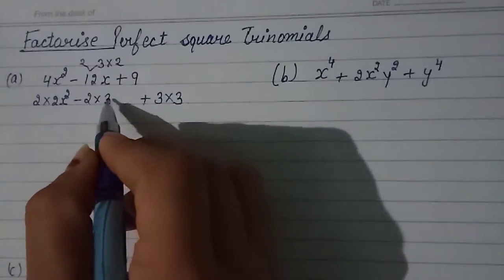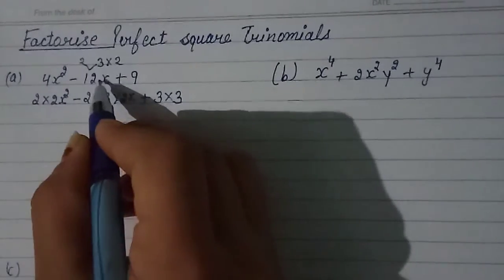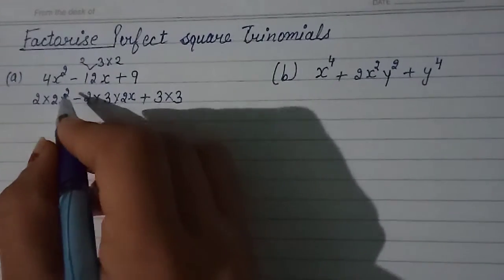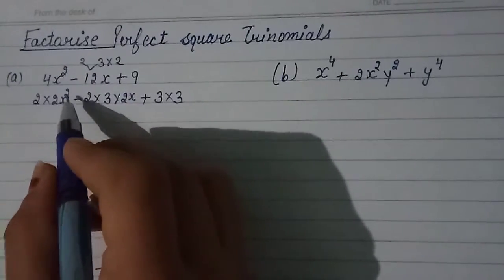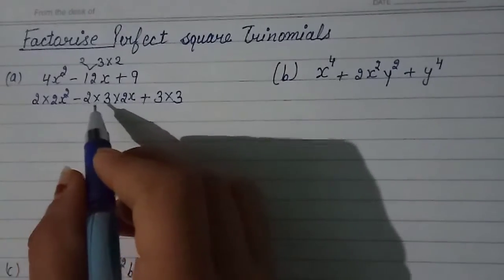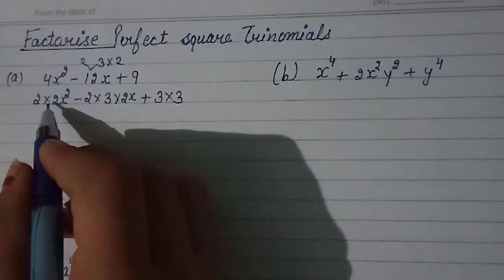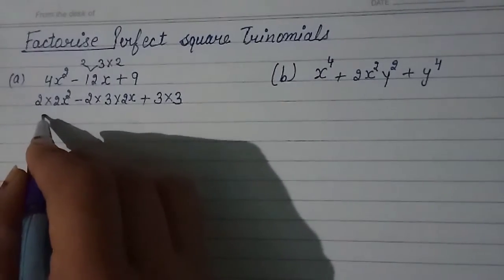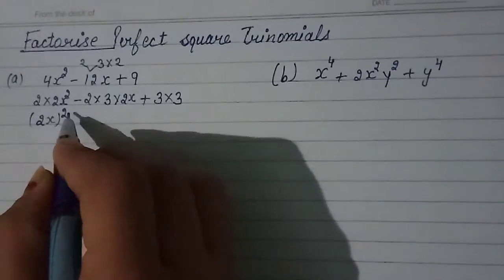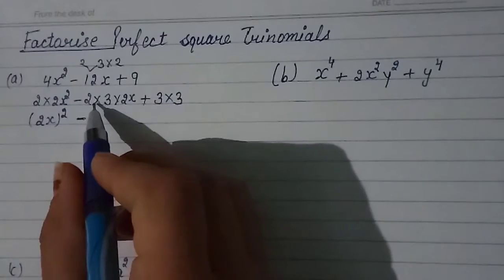So you can write it as 2 into 3 into 2, but write x as well because x is here. Because this one is x, we will also write it. We have 2 into 2x squared. If I want to factorize this x squared, then x into x will go. I will just have to show you — you can write 2 into 2 into 2, you can write it as 2x.